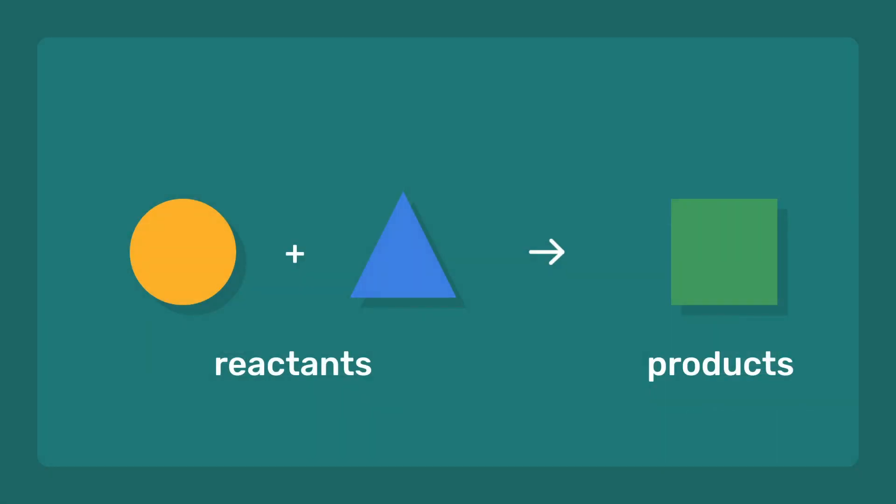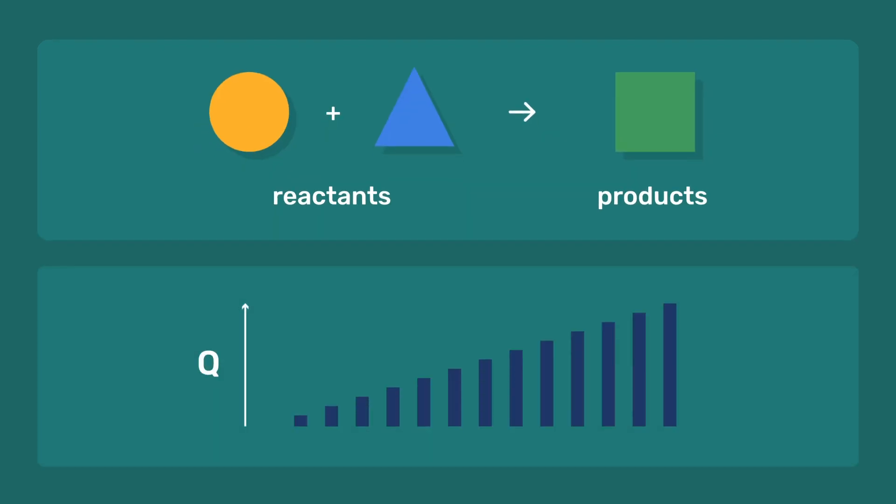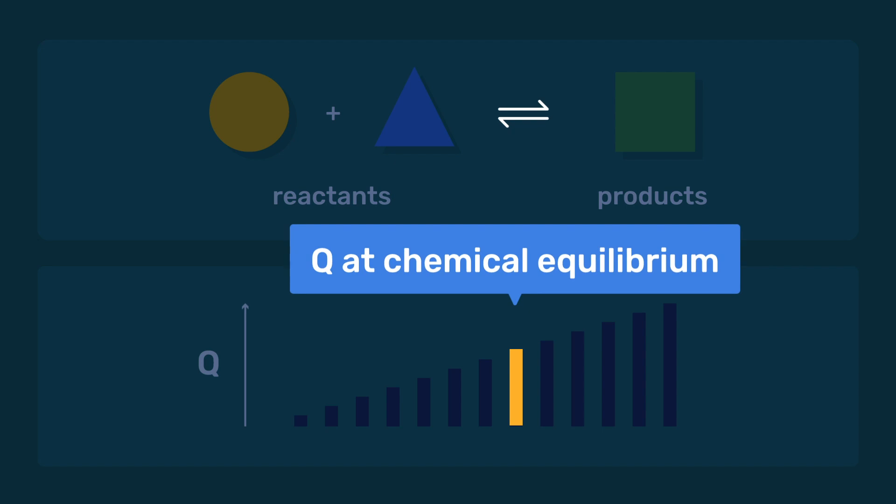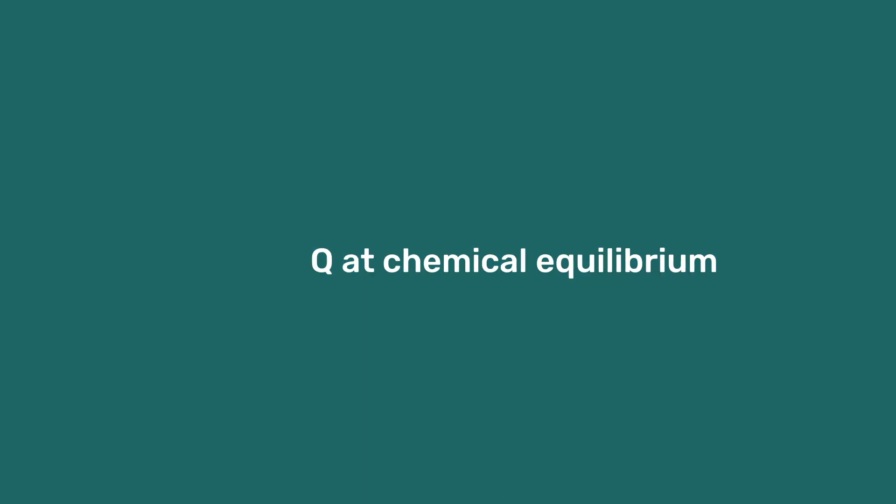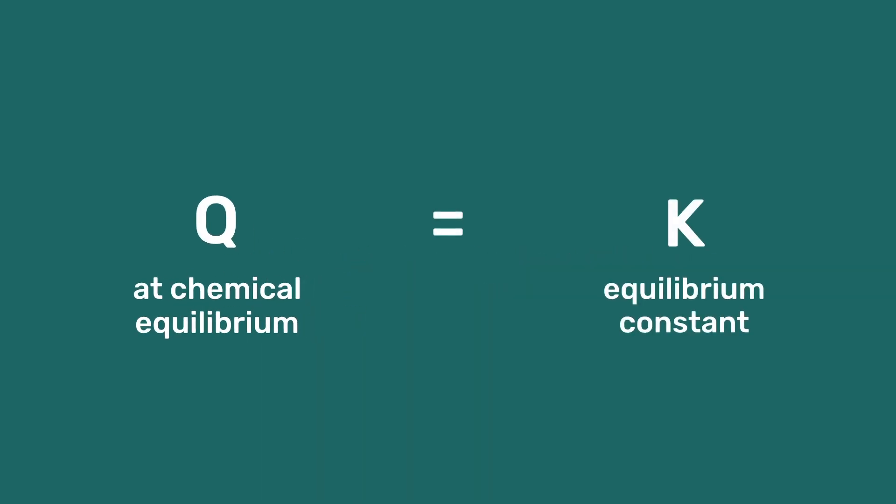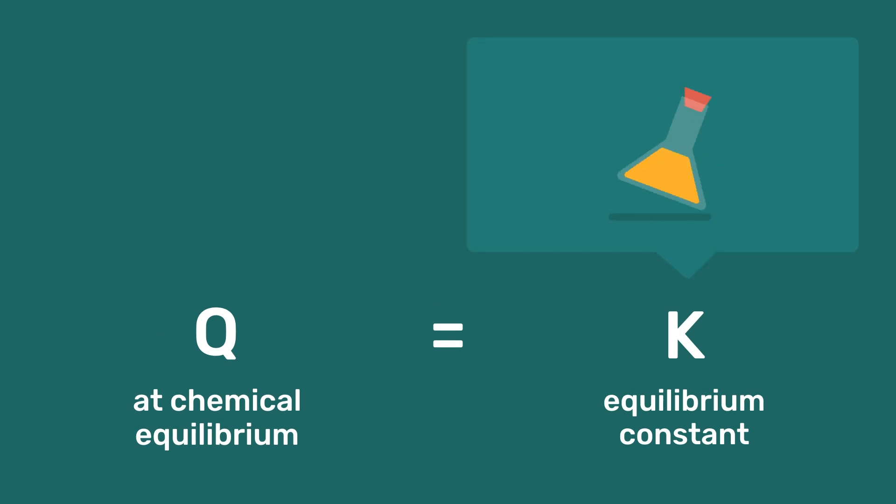For each chemical reaction, there is a specific value of the reaction product Q which corresponds to chemical equilibrium. This value is noted K and can be determined experimentally or looked up in thermodynamic tables.